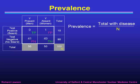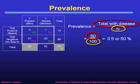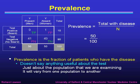Let's define what we mean by prevalence. Prevalence is defined as the total number with the disease divided by the overall total n. In this example, the total with the disease is 50, and the overall total is 100, so the prevalence is 50 over 100, which is 0.5 or 50 percent. Prevalence is the fraction of patients who have the disease — it doesn't tell us anything about the test, just about the population we're examining.